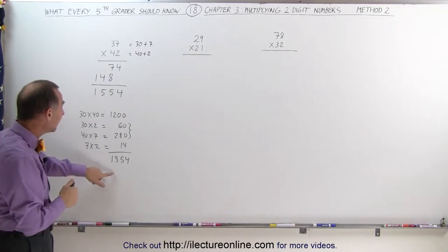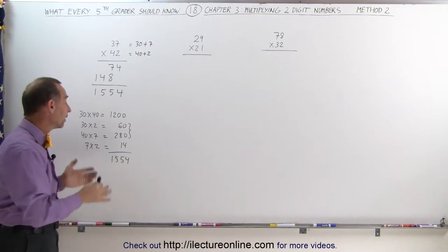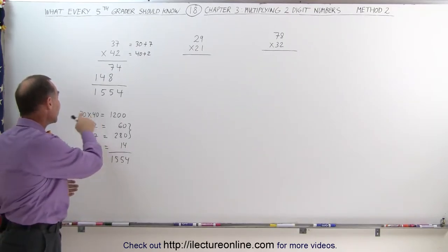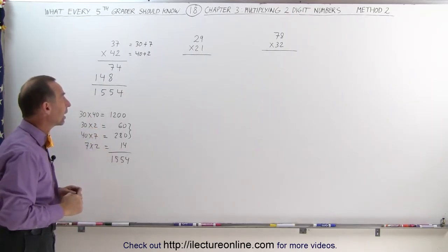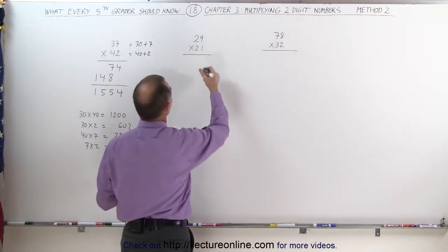And then add another 2 plus 7, that gives me another 14, that's 1,554. So notice, you can do all that in your head by simply breaking the product down like that. Let's try it again on this example right here. Again, we first work it out longhand.